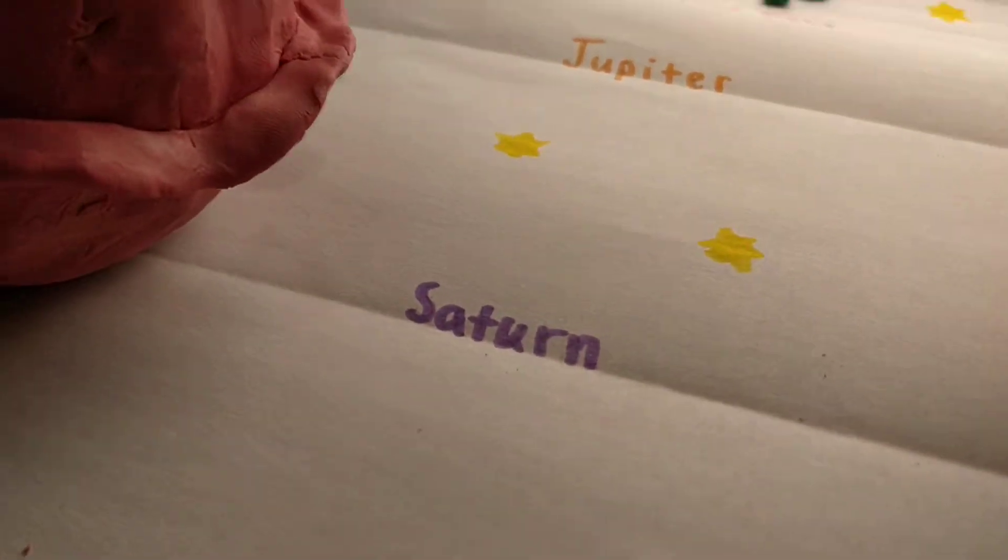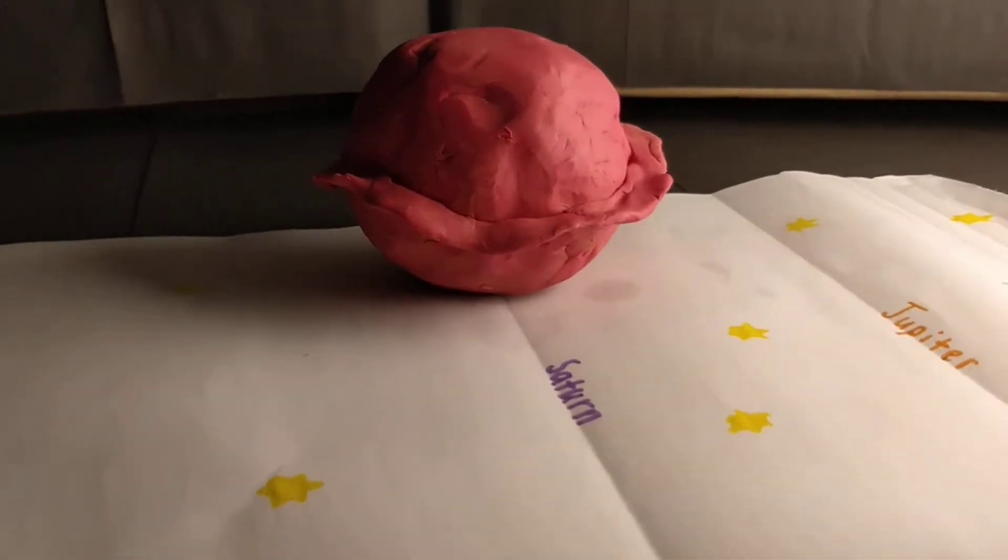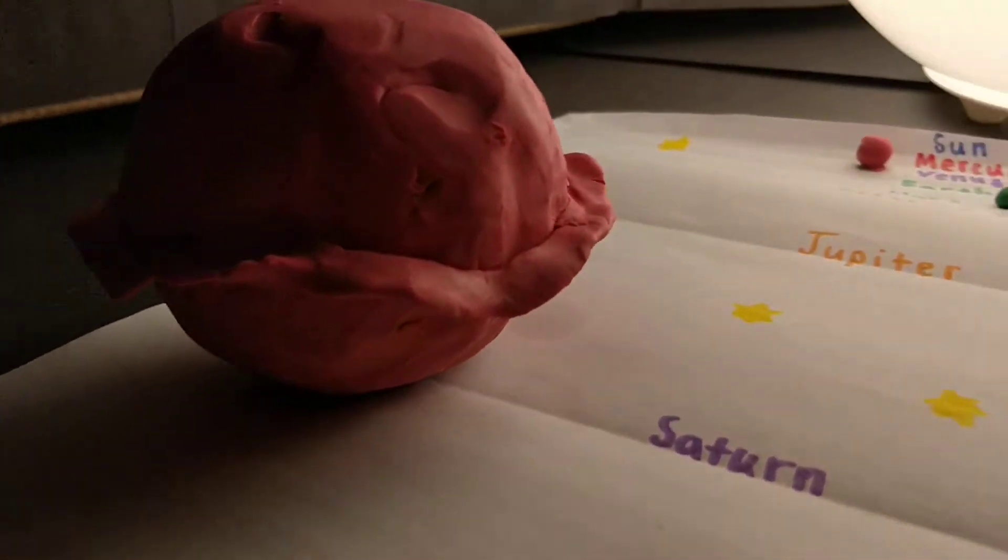Saturn. It is best known for its ring system, which was first observed in 1610. It is the flattest planet.